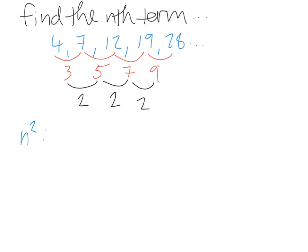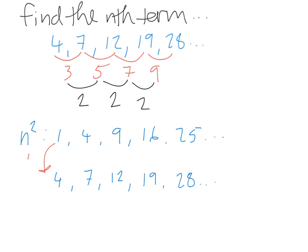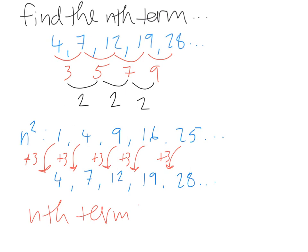So again we're going to write out the typical square number sequence: 1, 4, 9, 16, 25... Then we write out our sequence directly underneath: 4, 7, 12, 19, 28. And we compare the two. To get from 1 to 4, it is plus 3. From 4 to 7, plus 3 again. From 9 to 12, plus 3. From 16 to 19, plus 3. From 25 to 28, plus 3. So the nth term of our sequence is n squared plus 3.